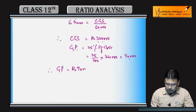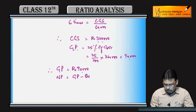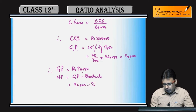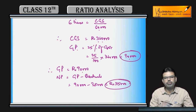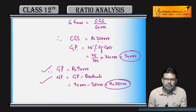Net profit formula is gross profit minus indirect expenses, that is overheads, plus indirect income if any. Since no indirect income is given, net profit is Rs. 90,000 minus Rs. 35,000, which equals Rs. 55,000. So gross profit and net profit are the two things asked from the inventory turnover ratio question. Thank you.